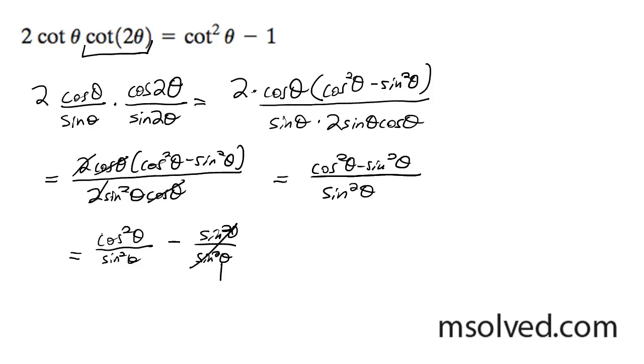So this becomes one, and this right here in the left portion is equal to the cotangent squared theta, so we have our cotangent squared theta minus one. And that's it, that's how you do it.